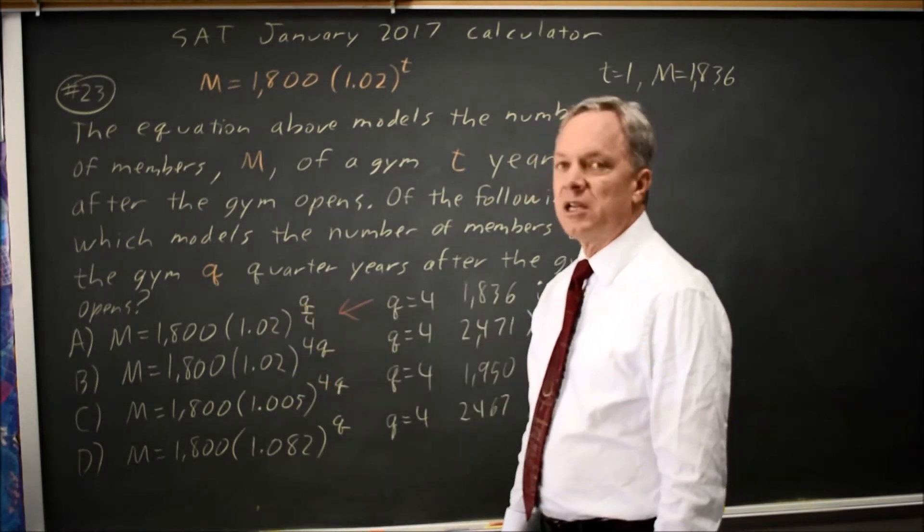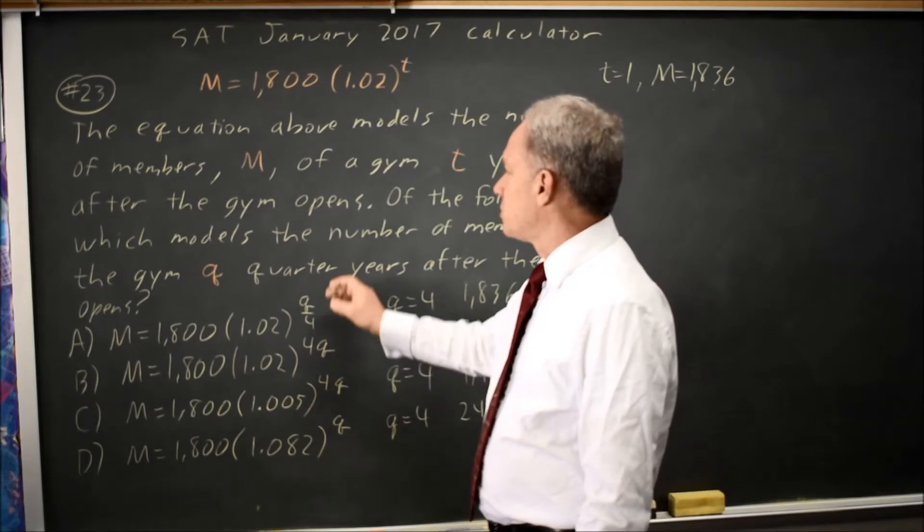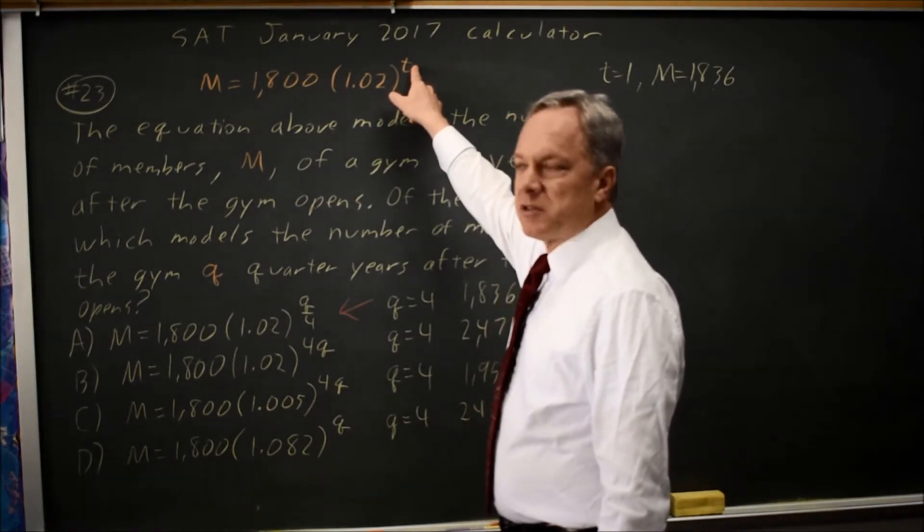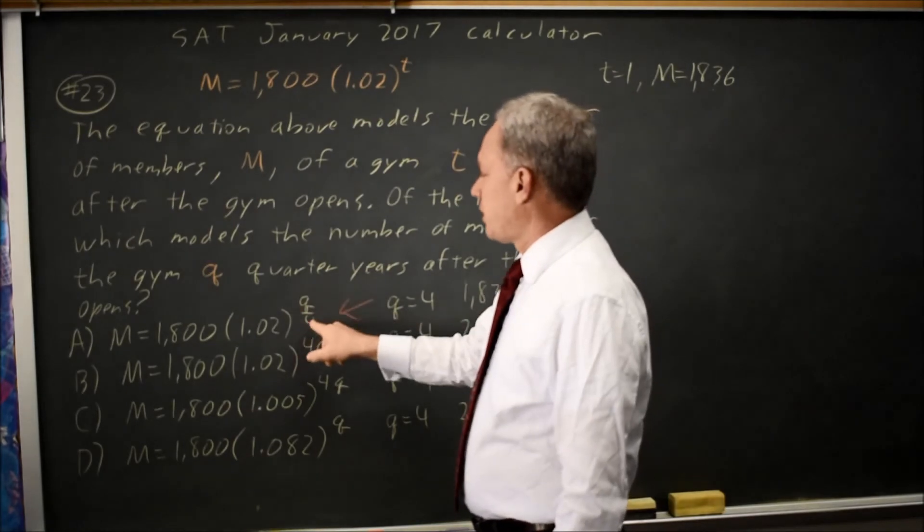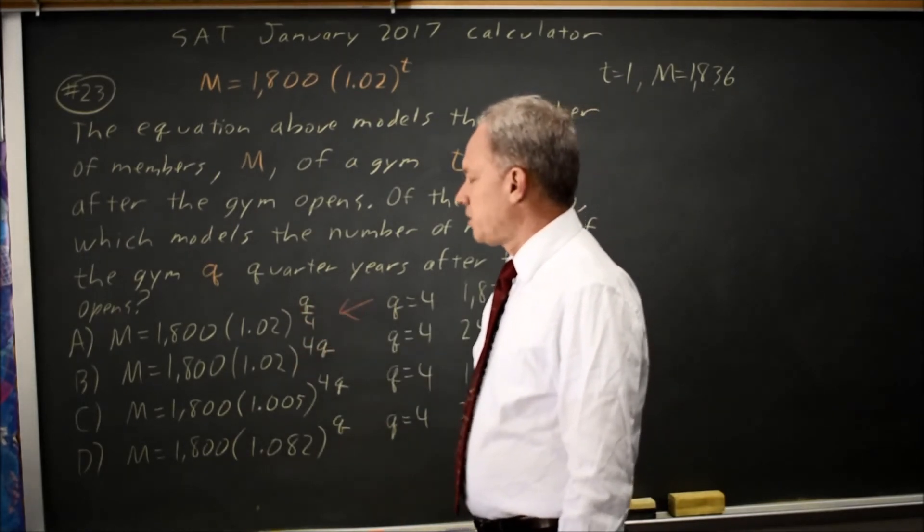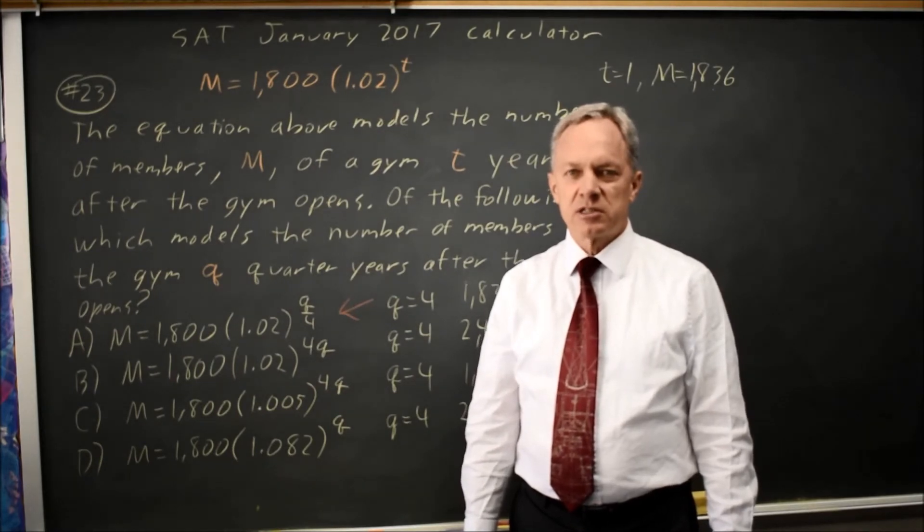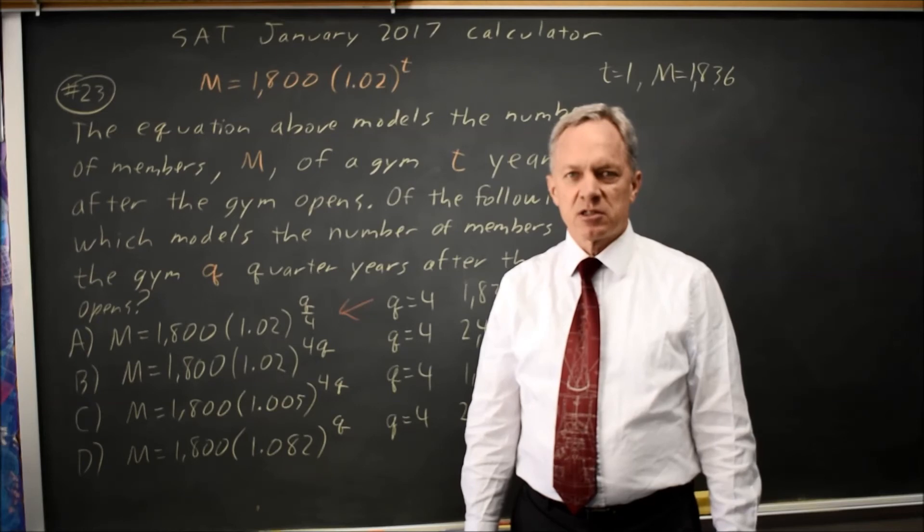A makes sense. Let's check 8 quarters, which is 2 years. The original equation gives us t equals 2, so I want the exponent q over 4 to also be 2, and it is at 8 quarters. So choice A matches, and that would be our answer.